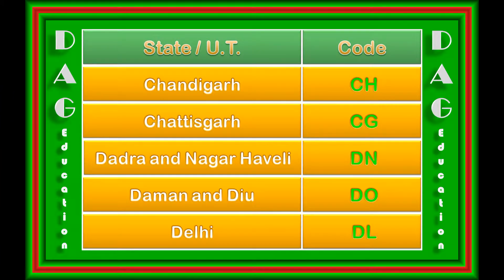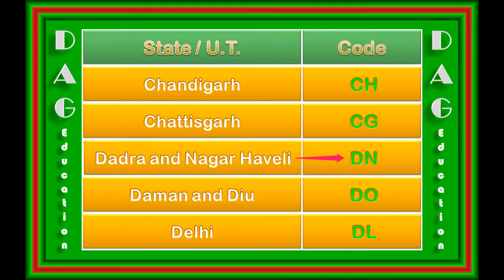Chandigarh: CH. Chhattisgarh: CG. Dadra and Nagar Haveli: DN. Daman and Diu: DD. Delhi: DL.